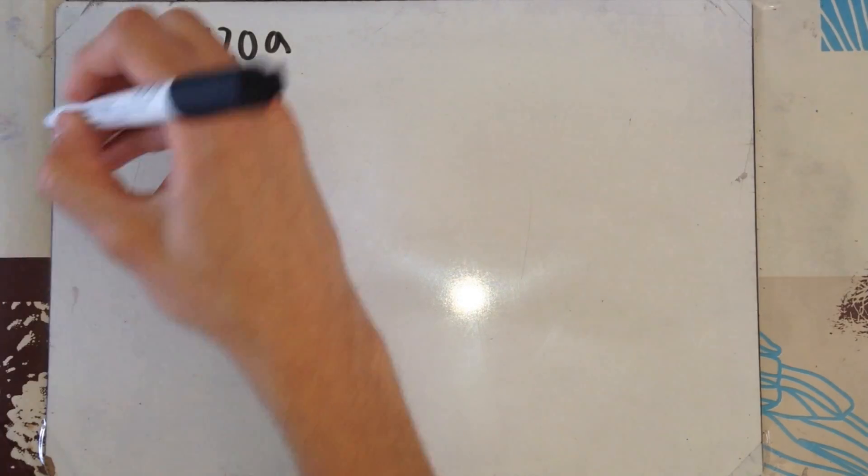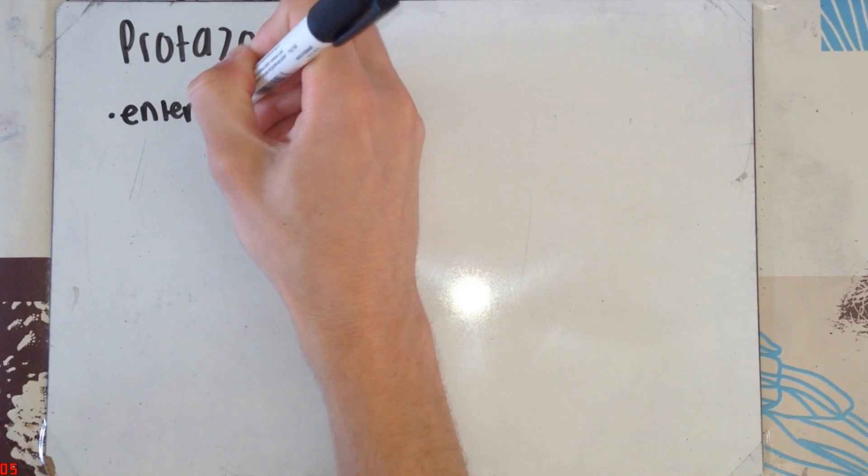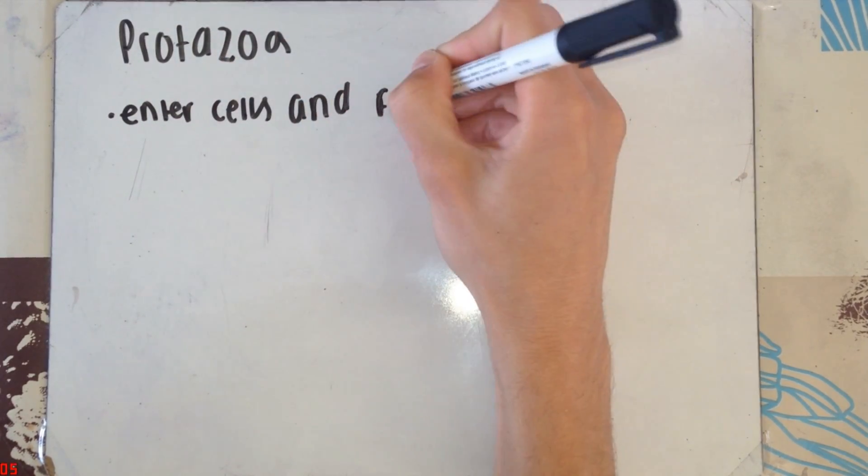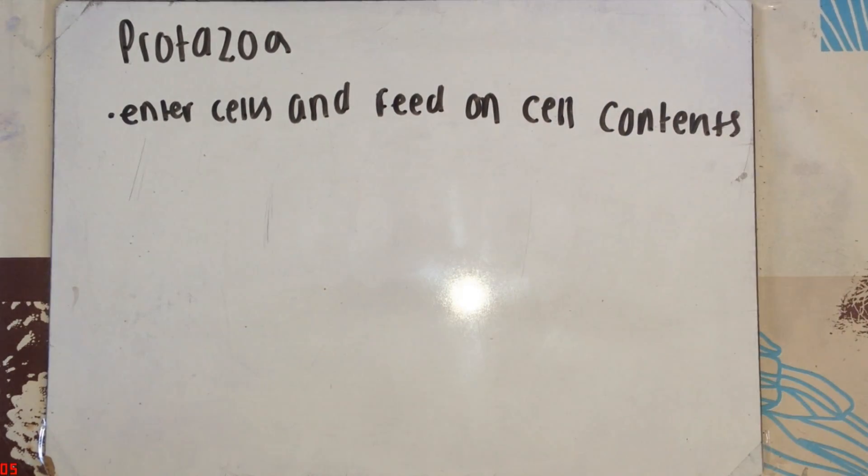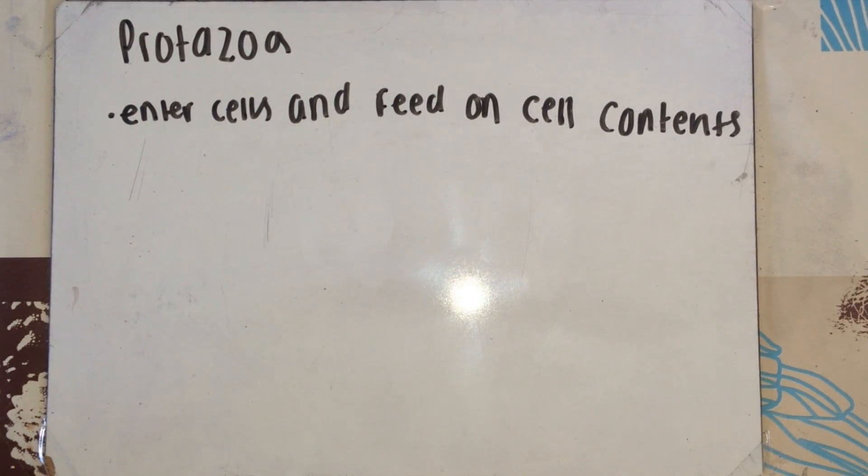Next, we have protozoa. Protozoa are a group of unicellular eukaryotic organisms. An example of a protozoa would be the plasmodium parasite in malaria. Protozoa enter the cells of the host and feed on the cell contents.